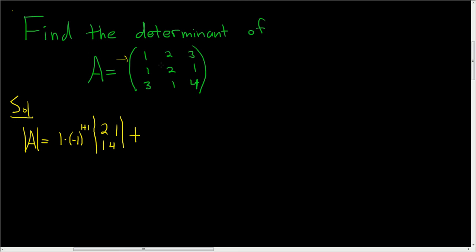Then you add. Then you go to the next one. So now we're looking at the 2. So 2, and then again, you write the negative 1. We're in the first row, second column. So it's 1 plus 2, row plus column. Then you write the line.